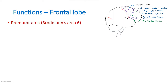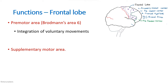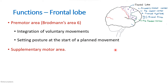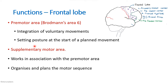The pre-motor area is responsible for integration of different voluntary movements and for setting the posture at the start of a planned movement, providing background support for the primary motor area. The supplementary motor area works in association with the pre-motor area and organizes and plans the motor sequence — forming a motor image of all the different sequences of muscle movements to be executed. The pre-motor area sets the posture, and this information is conveyed to the primary motor cortex.